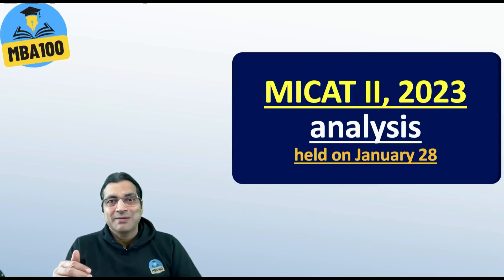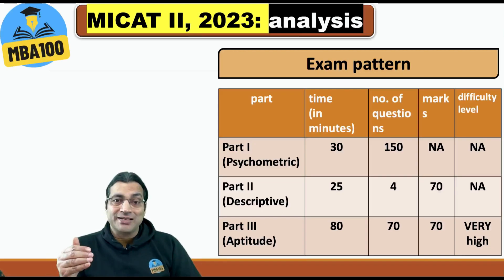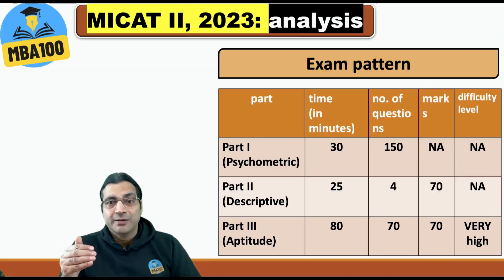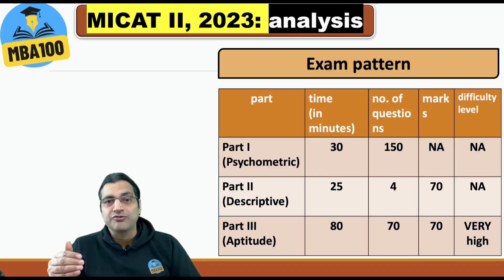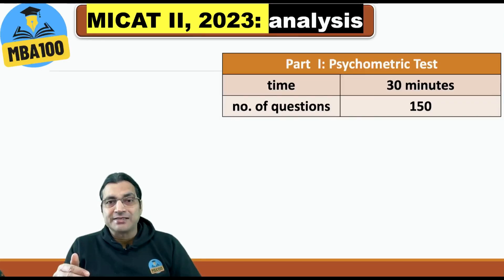We will get to see simple questions from almost all the sections. Part 1 is the psychometric test — 150 questions to be done in 30 minutes. Part 2 is descriptive — 4 questions to be done in 25 minutes. And Part 3 is aptitude — 70 questions to be done in 80 minutes.